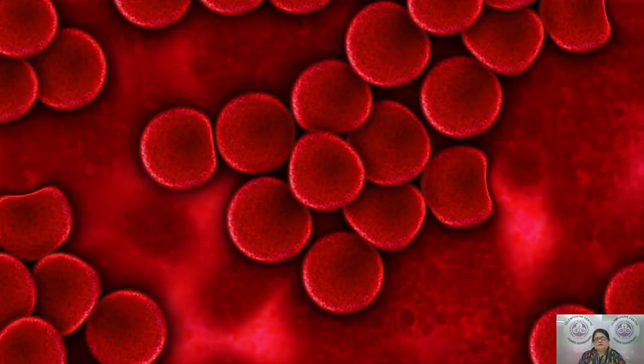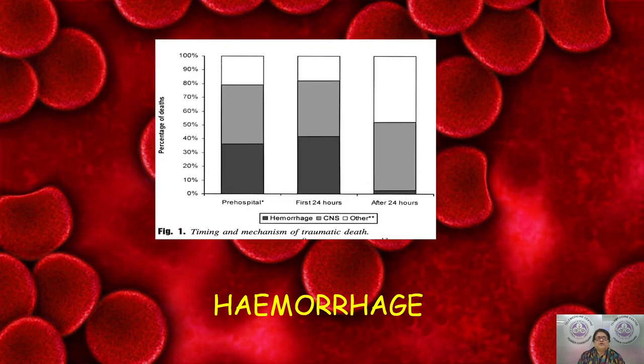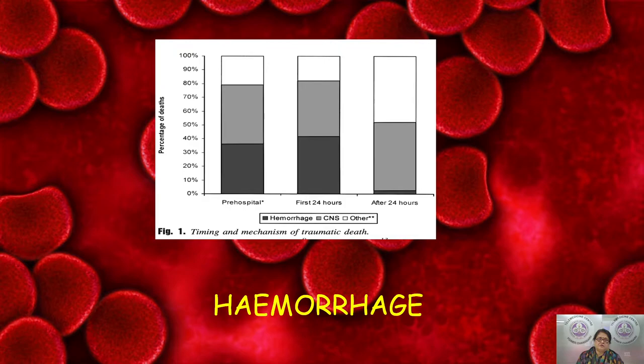It becomes very important for us to understand what is the major cause of mortality in trauma patients. Without any doubt, hemorrhage is the leading cause of mortality. If you talk about timing and mechanisms, even in the pre-hospital setting or the first 24 hours, as compared to other injuries, hemorrhage takes the lead in mortality. It's very important to understand how to manage an acutely hemorrhaging, exsanguinating patient in extremis.